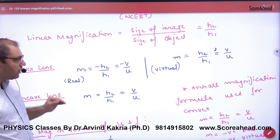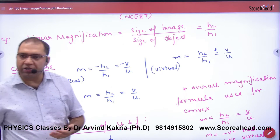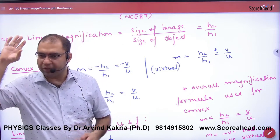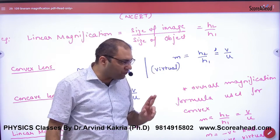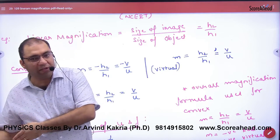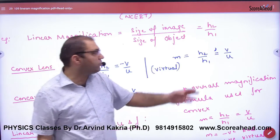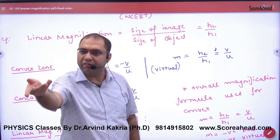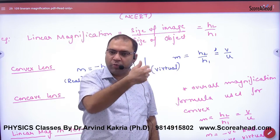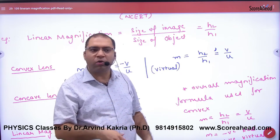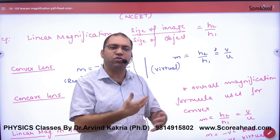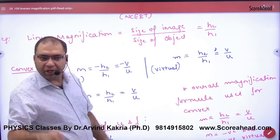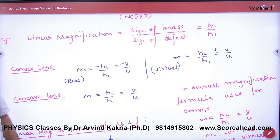If the case is virtual: in a virtual image, the object is upright and the image is also upright, so h2 is positive and h1 is positive. The image and object are on the same side, so both v and u are negative. Therefore magnification equals (−v)/(−u) = v/u, which is positive. So overall magnification in the virtual case is positive. To summarize: in real images, magnification is negative; in virtual images, magnification is positive.